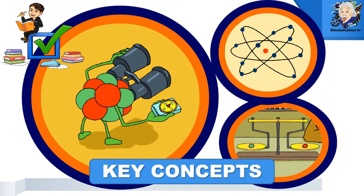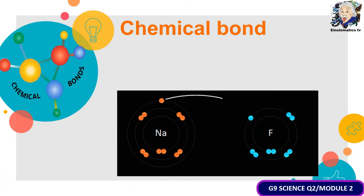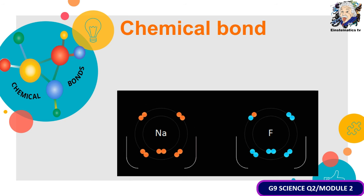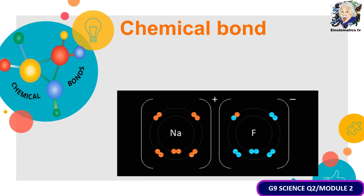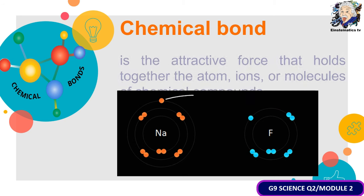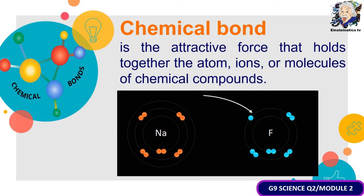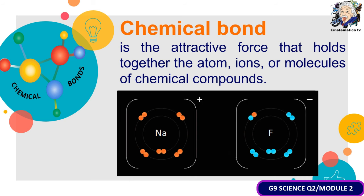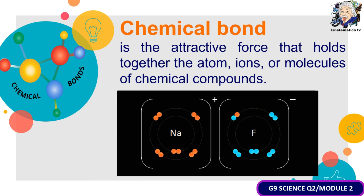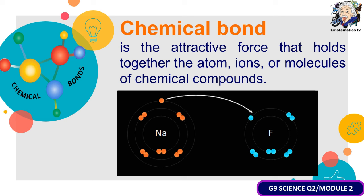To help us fully understand today's lesson, let us first discuss the key concepts. The first key concept is about chemical bonds. A chemical bond is the attractive force that holds together the atoms, ions, or molecules of chemical compounds.